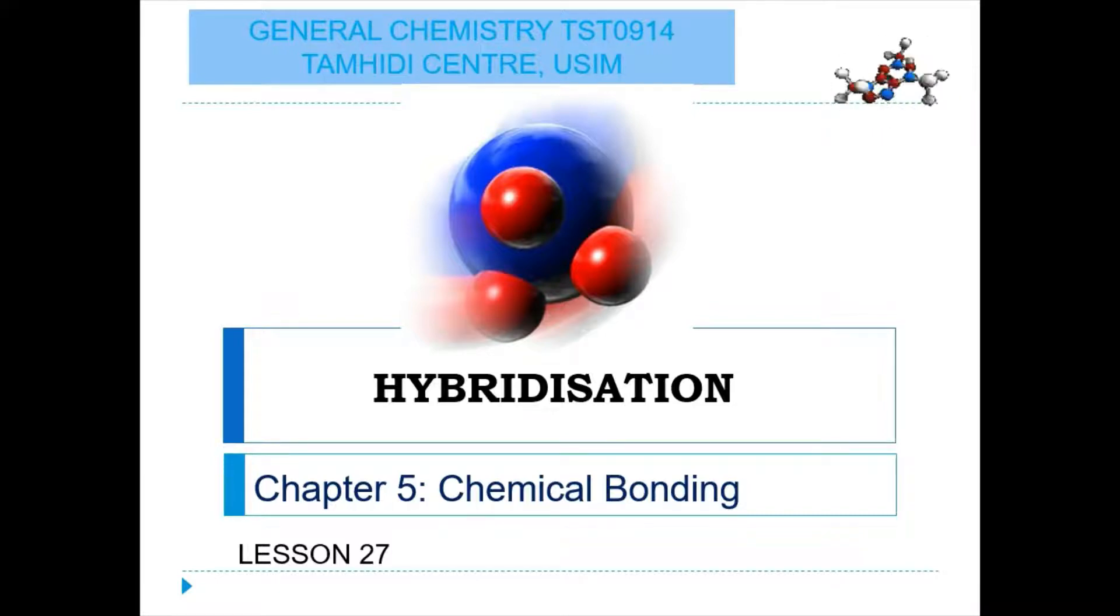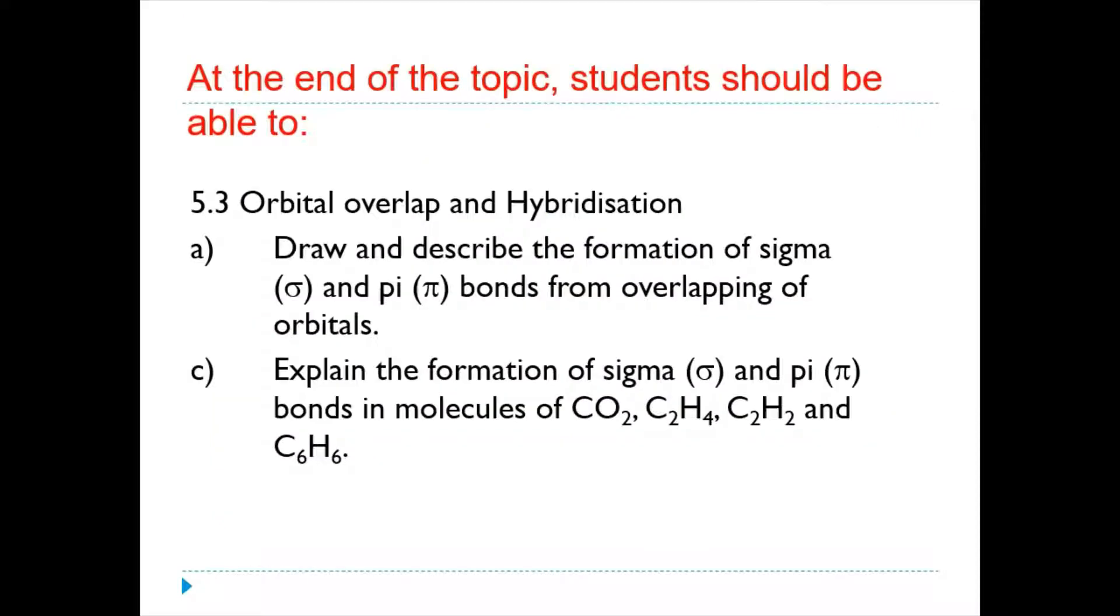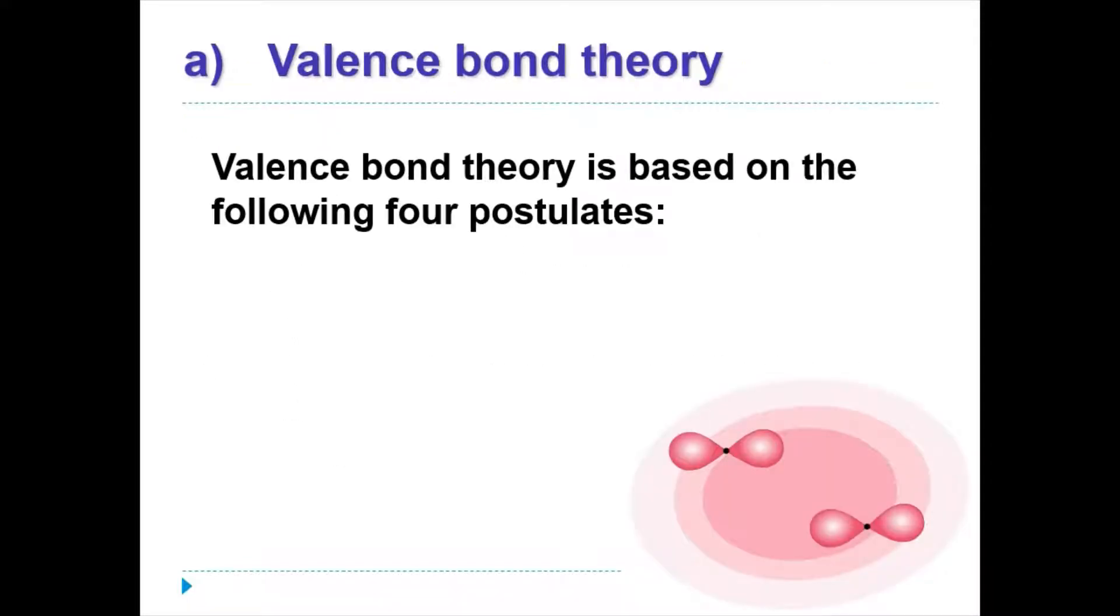Hello, Assalamualaikum. We meet again. Today we are going to continue Chapter 5, Chemical Bonding, with Lesson 27, Hybridization. We are going to draw and describe the formation of sigma and pi bonds from overlapping of orbitals and the formation of carbon dioxide, ethene, ethyne, and benzene.